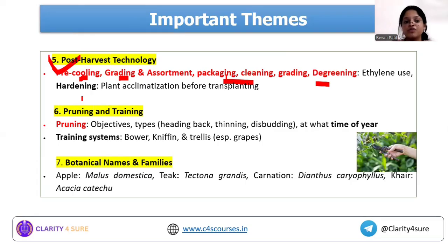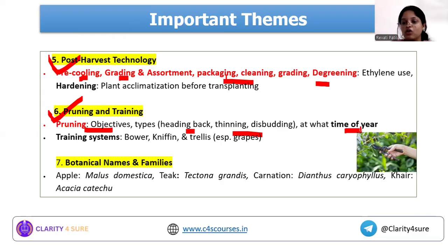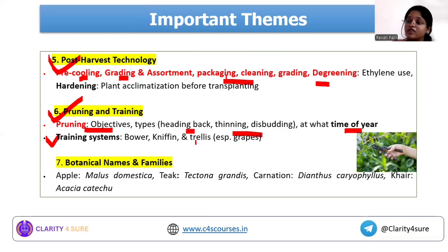For pruning and training, there are different types of pruning such as heading back, thinning, and disbudding. You also need to know at what period or month pruning is done for particular crops. There are also different training systems — especially with respect to grapes, training systems are particularly important.